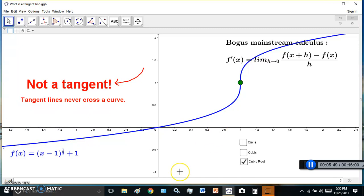So the new calculus handles points of inflections correctly. The bogus mainstream calculus does not.